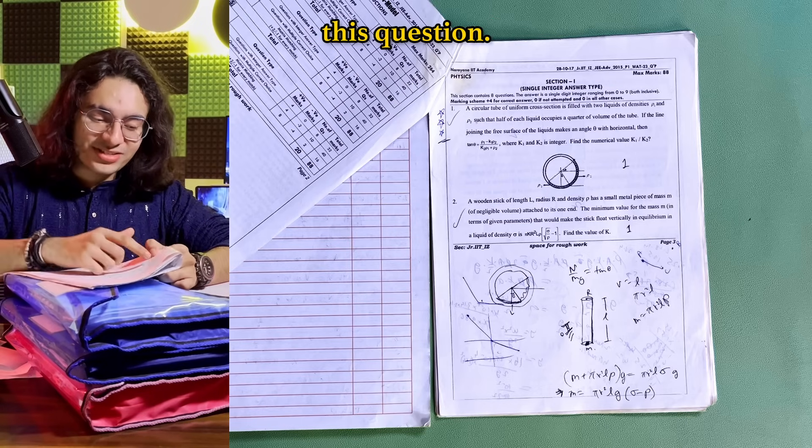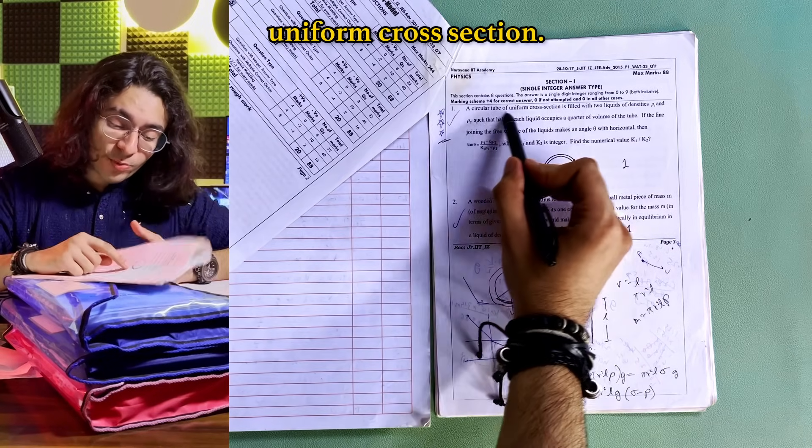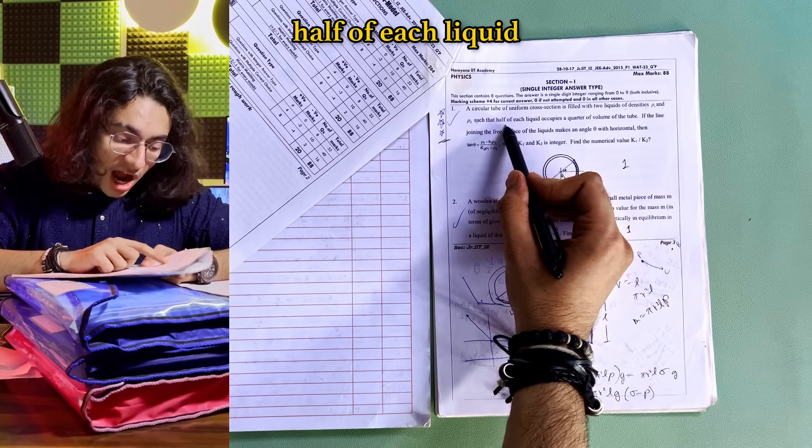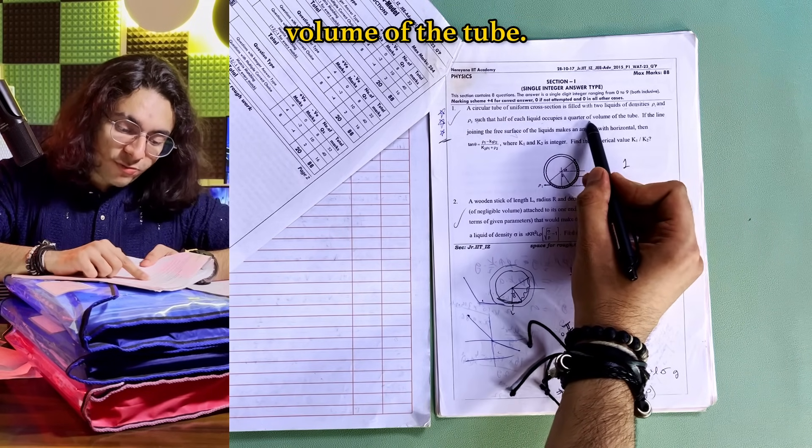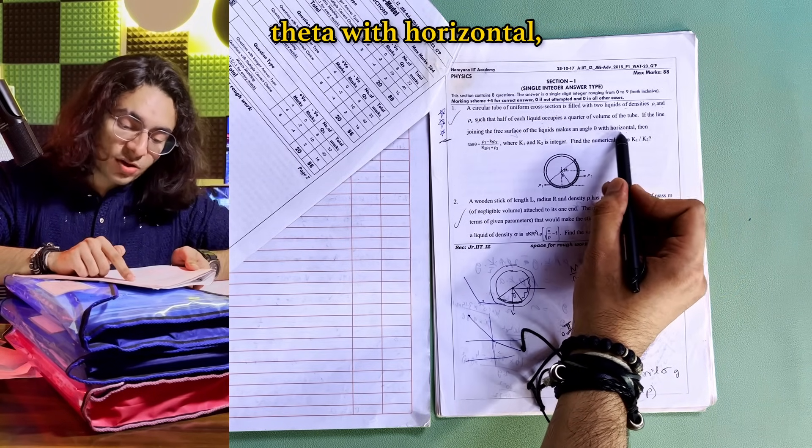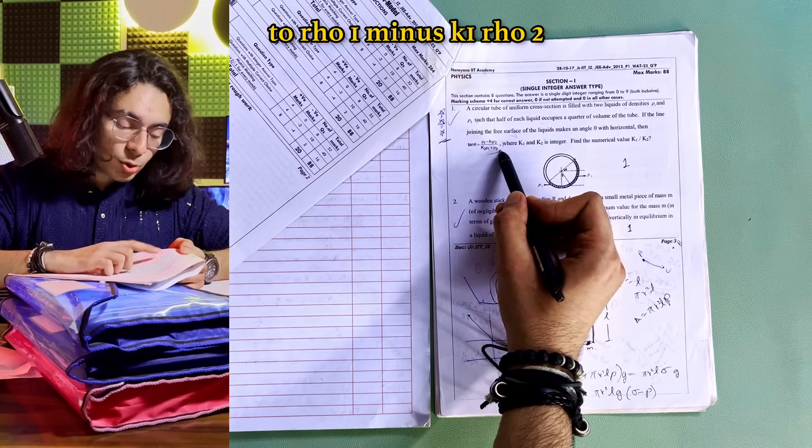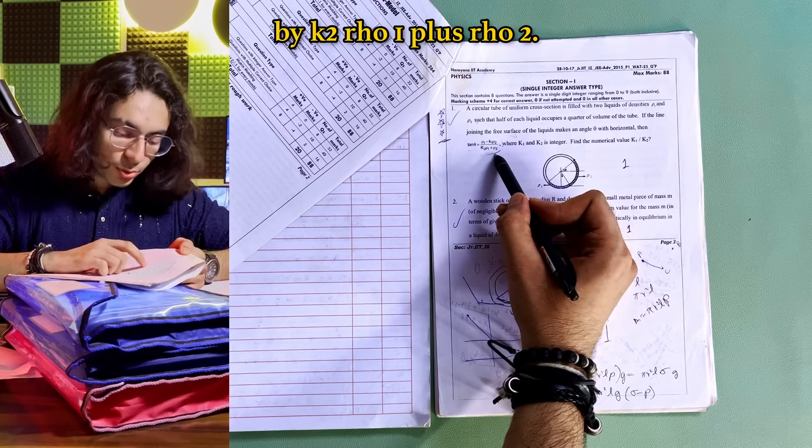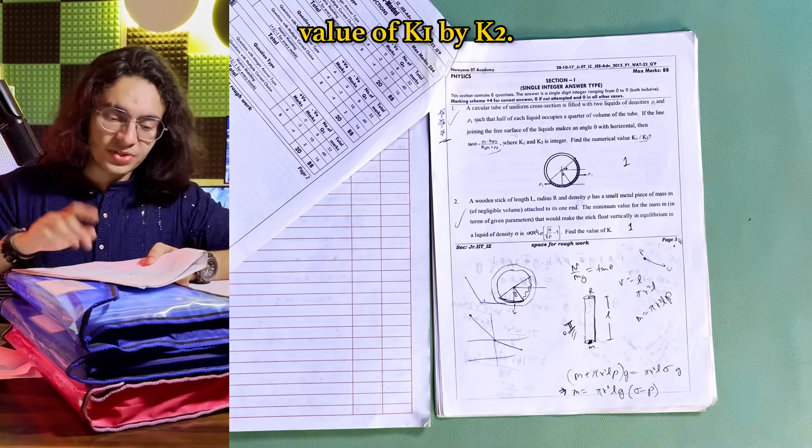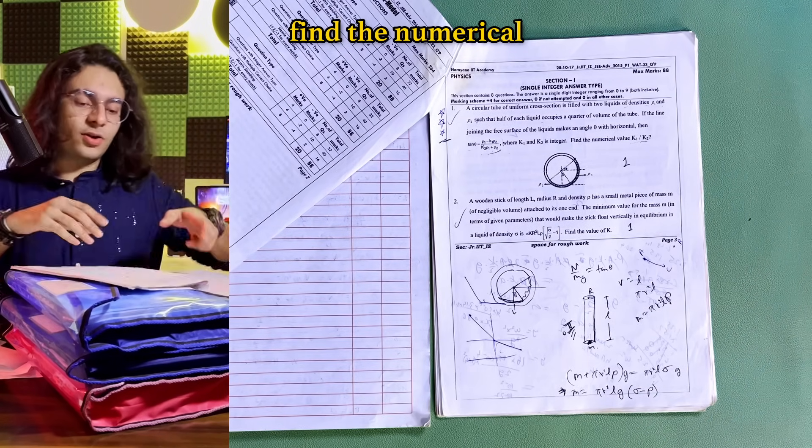Let's go through this question it's something that I've marked for three stars. So a circular tube of uniform cross section is filled with two liquids of density rho1 and rho2 such that half of each liquid occupies a quarter of volume of the tube. If the line joining the free surface of the liquids makes an angle theta with horizontal then tan theta is equal to so this equation is given tan theta is equal to rho1 minus k1 rho2 by k2 rho1 plus rho2 where k1 and k2 are integers. We just have to find the numerical value of k1 by k2 so it's a numerical question integer type question and we have to find the numerical value of k1 by k2.